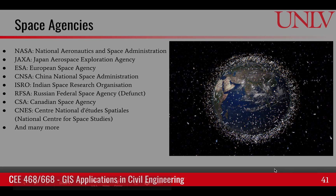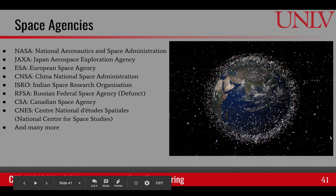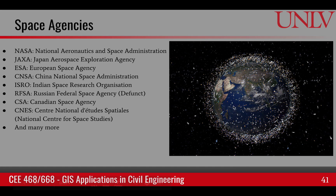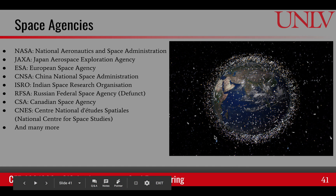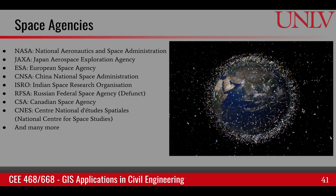There are many space agencies in the world with many satellites in space. The sizes of these satellites are a little exaggerated to show how many we have out there right now. These include remote sensing satellites, communication satellites, weather satellites, and military surveillance satellites. It's essentially a space race, and all countries capable of sending satellites are doing so to advance their own programs.